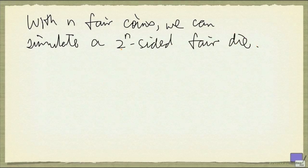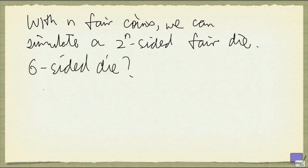In other words, if we manage to have 3 coins, then I can simulate an 8-sided fair die. But now the question is, what about 6-sided die? What we'll do is the following. Suppose that we have 3 coins.